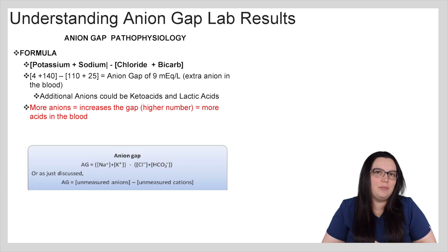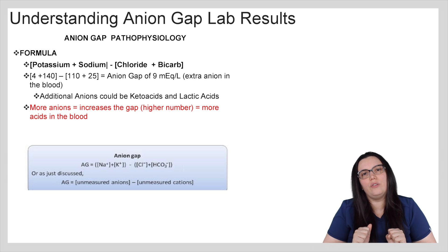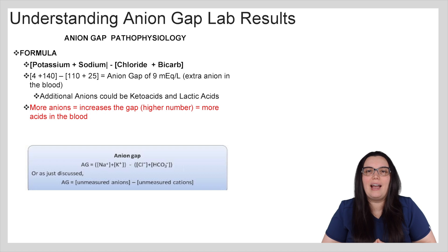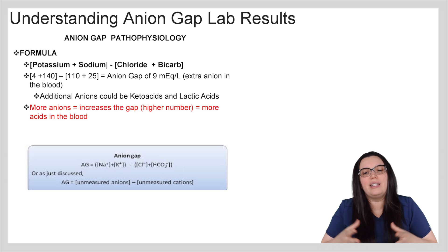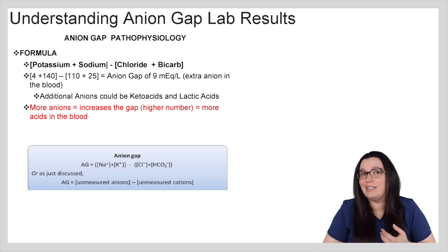Say we have a potassium of 4, a sodium of 140, a chloride of 110, and a bicarb of 25. When we add those two values to themselves and then subtract them, we get an anion gap of 9 milliequivalents per liter, meaning that we have extra anion in the blood. Those additional anions could be keto acids as well as lactic acids.